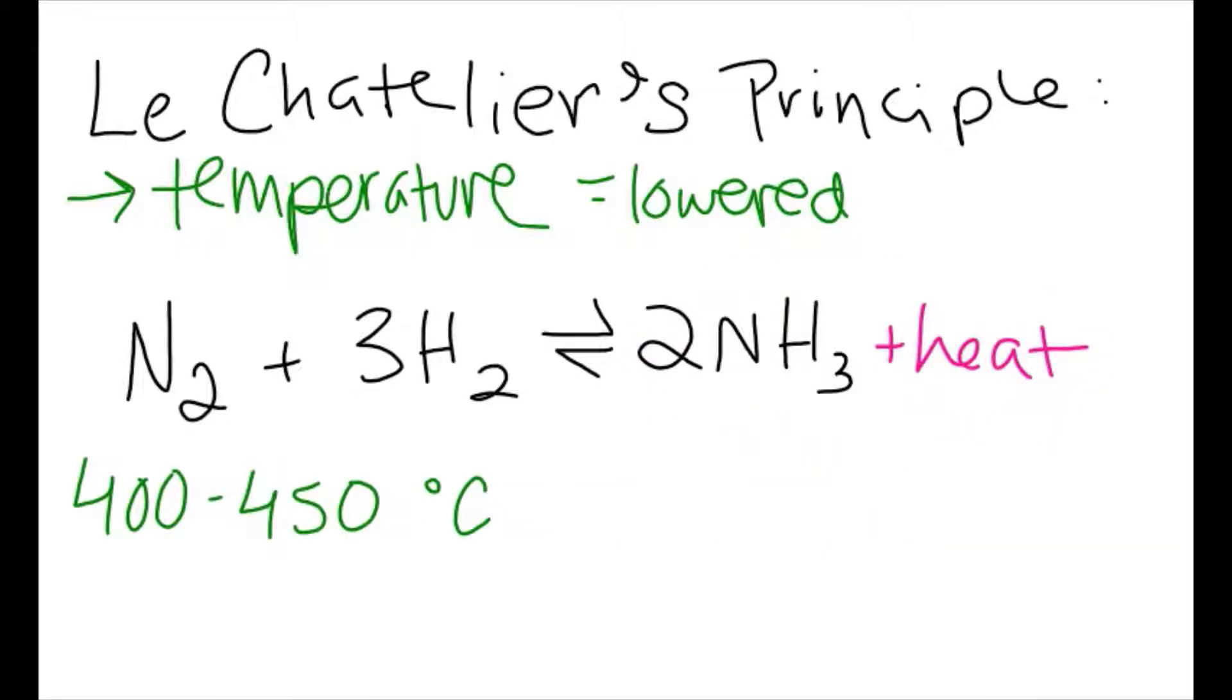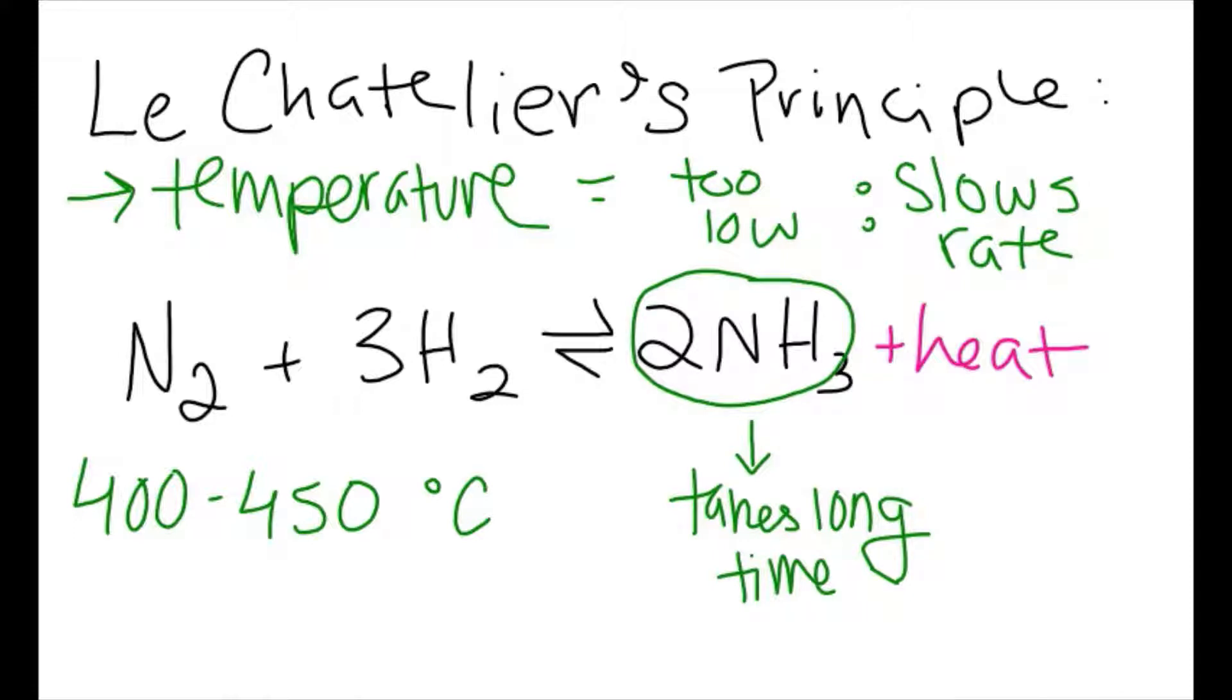But 400 to 450 degrees Celsius isn't exactly cold. This is because lower temperature slows the rate at which nitrogen and hydrogen particles collide to form ammonia, meaning production would take forever. So 400 to 450 degrees Celsius is the best temperature to produce as much ammonia as possible as quickly as possible.